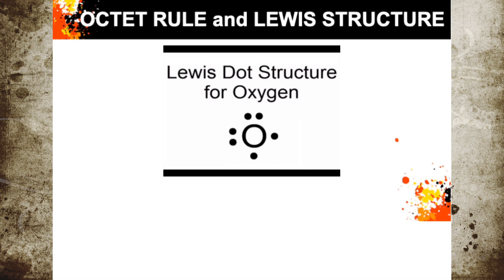The octet rule states that atoms like to have eight valence electrons. Atoms that have eight outer shell electrons are stable and non-reactive. So that means only the noble gases will have these eight electrons, and therefore the rest will be reactive.